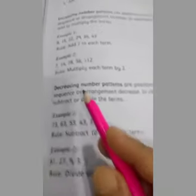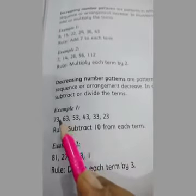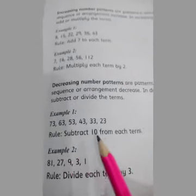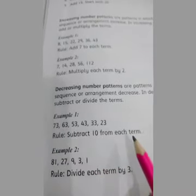Now for decreasing numbers, what do we do? Example: 73, 63, 53, 43, 33. What rule do we follow? We subtract from each number. All right.